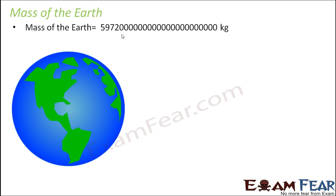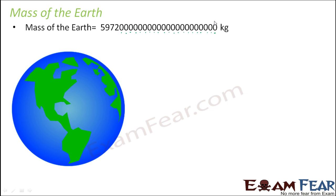Instead of writing all those zeros, we represent the number in a simpler way. The digits are 5, 9, 7, 2 followed by some 21 zeros. So we write it in its standard form. The decimal point is currently at the end, and we need to move it all the way to a place where we get a decimal number between 1 and 10.